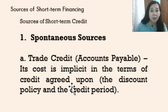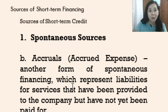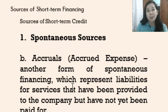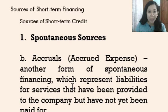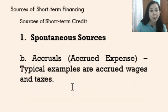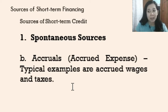The second spontaneous source of short-term credit is the accrual, or accrued expenses. This is another form of spontaneous financing. It represents liabilities for services that have been provided to the company but not yet paid for. Typical examples are accrued wages and taxes, which will be paid at a certain scheduled date as provided by the contract.